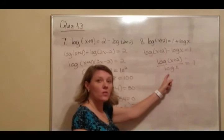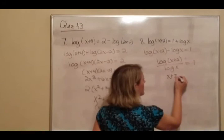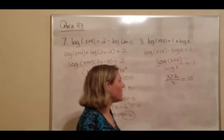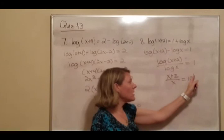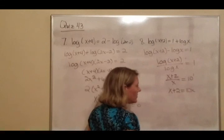We want to get rid of the logs. Just like here, when we got rid of this one, the number became the exponent. Here, the number's going to become the exponent. Now we want to get rid of this x. So we're going to multiply both sides by x, and we'll go ahead and get rid of that exponent, because 10 to the first power is 10. So that would be x plus 2 equals 10x.